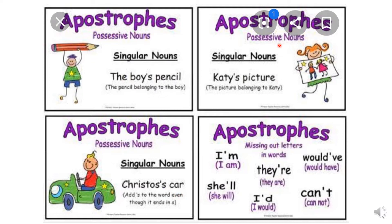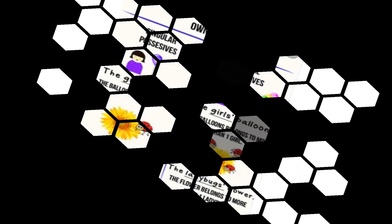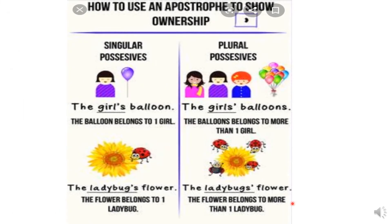Now, singular nouns: Catty's picture. This is Catty, this is her picture, so this is Catty's picture. Here we are using apostrophe for possessives. I have given examples earlier also, and here we are using apostrophe as contractions.